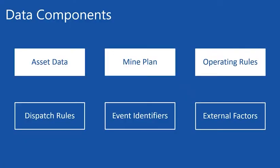The data components outside of the Simio model include asset data, mine plan data (not always available in fleet management data), operating rules governing how the load and haul cycle operates, dispatch and prioritization rules, event identifiers that trigger certain events and behavior in the logic, and the impact of external factors — typically upstream and downstream activities that affect system behavior.